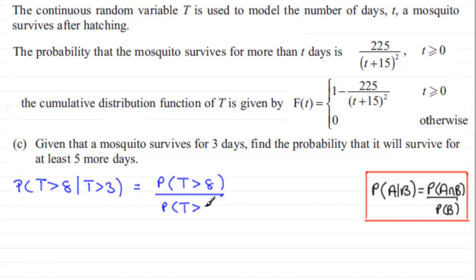To work out the probability that T is greater than eight, we simply substitute 8 into the formula: 225 over (8 plus 15) squared. Then we divide this by the probability of T being greater than three, so we substitute three: 225 over (3 plus 15) squared.